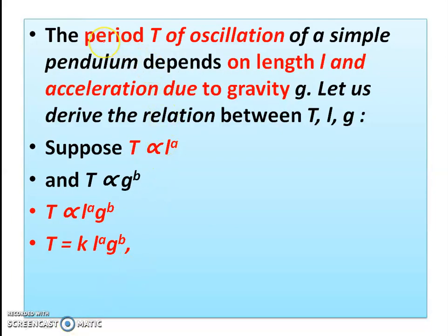Consider the period — indicated by capital T — of oscillation of a simple pendulum. Suppose the periodic time T depends on its length L and the acceleration due to gravity g. We want to find any relationship or formula for T in terms of L and g.